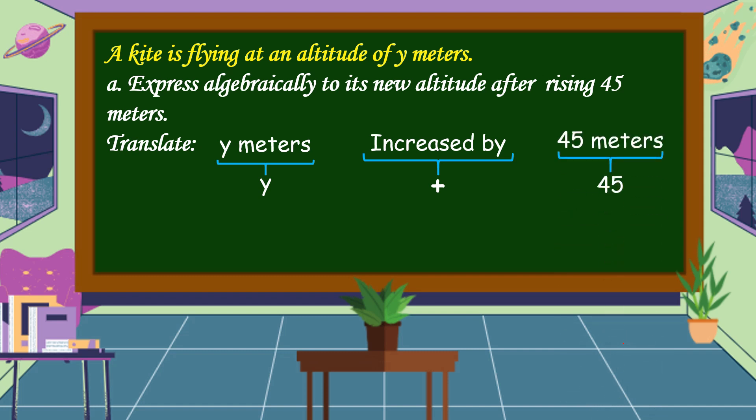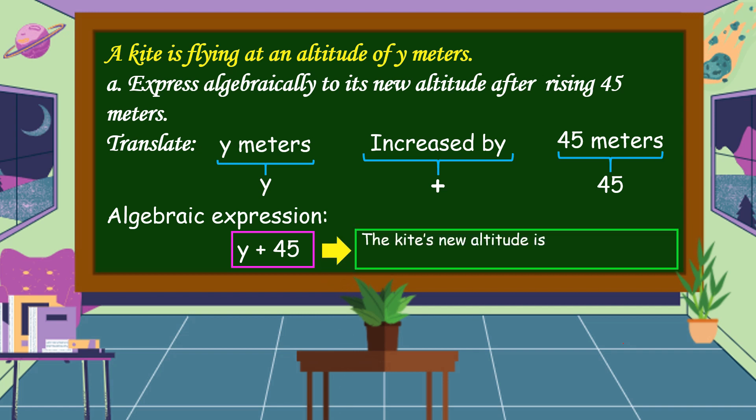So let's make an algebraic expression: y plus 45. This means that the kite's new altitude is 45 meters more than y meters.